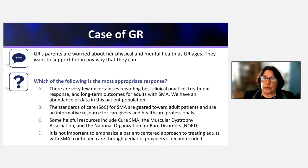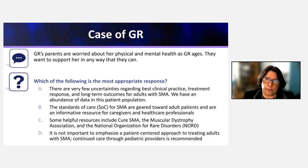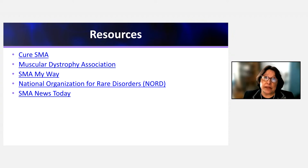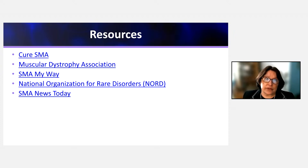Our role is also to set realistic expectations based on where patients are in their disease — whether early symptomatic, late symptomatic, or advanced — as all of these factors influence expected treatment response. Helpful patient resources include Cure SMA, the Muscular Dystrophy Association, SMA My Way, the National Organization for Rare Disorders, and SMA News Today. These are wonderful resources and good ways for patients to stay abreast of new research opportunities for their age group.